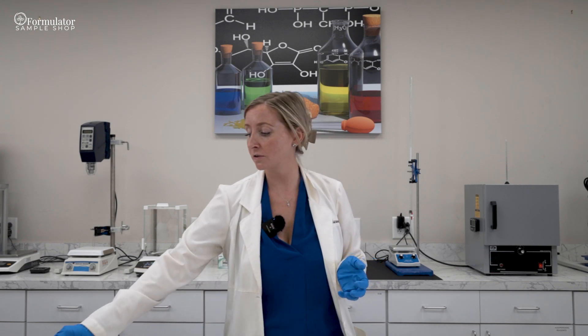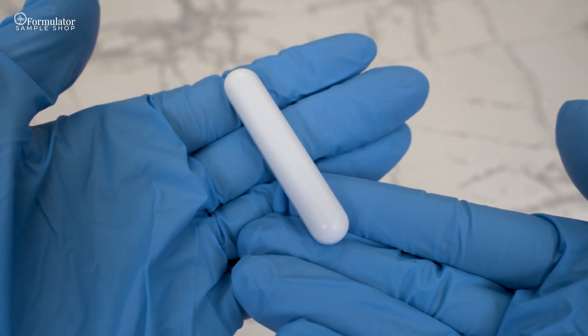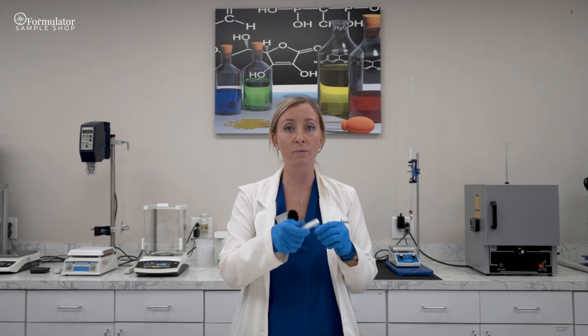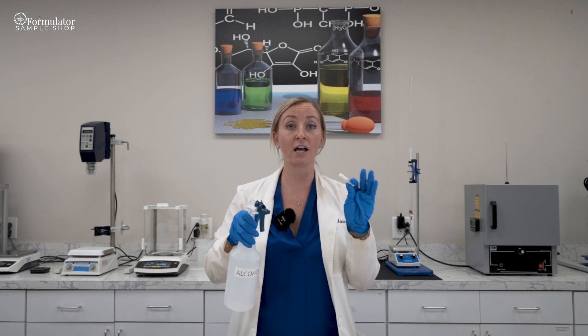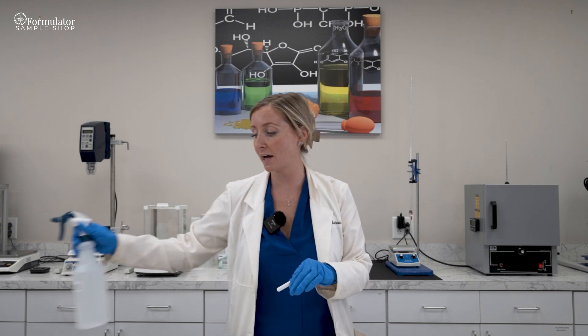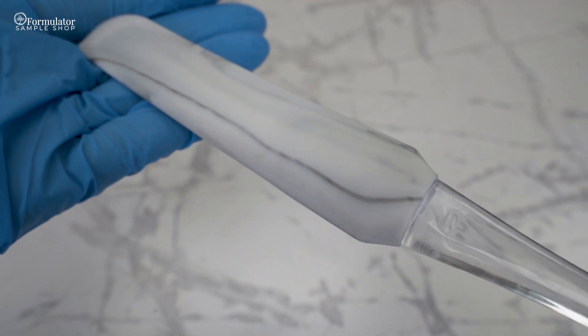You also want to make sure that any lab equipment that's going to touch your batch is also sterilized. Things like stir bars, you want to make sure that these are clean before you work with them. These could be rinsed with soap and water, put in the dishwasher, whatever you have on hand. But once that's done being cleaned, you want to spray it with alcohol and let it dry before using it in your batch. The same process goes for things like spatulas, so make sure that you spray those with alcohol to make sure that they're clean and dry before you use them in your batch.